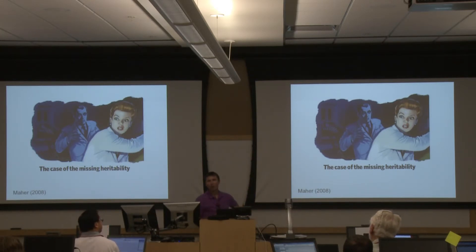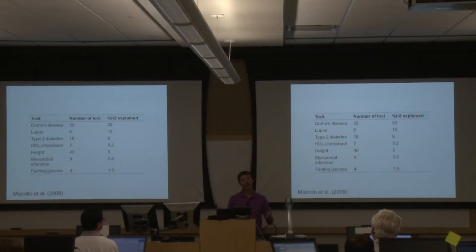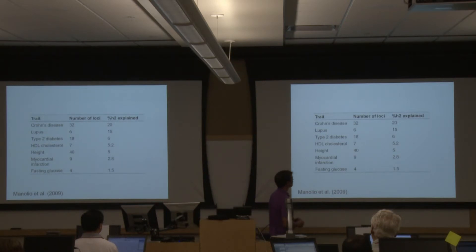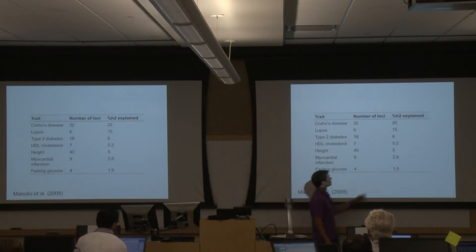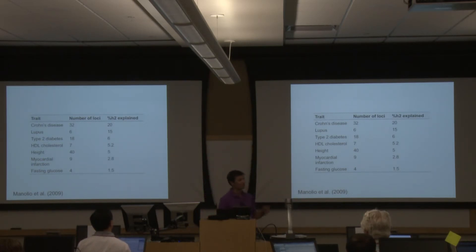These things result in what has been called the missing heritability. This concept was published about six years ago. Despite massive genome-wide association studies in humans involving tens of thousands of individuals and hundreds of thousands of markers, they've only been able to explain a small proportion of the genetic variation for complex traits like height. They detected 40 QTL through all these GWAS studies, but they were only able to explain about 5% of the variation. The question is: where is the rest of the genetic variation, and why aren't we detecting it using GWAS methods? The answer is a combination of all these different factors I just presented.